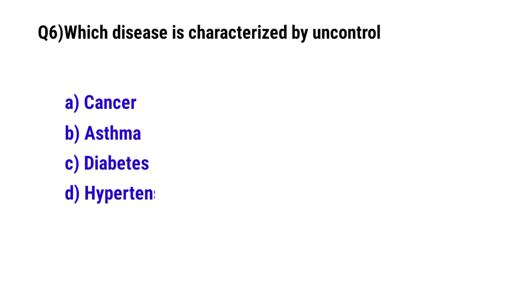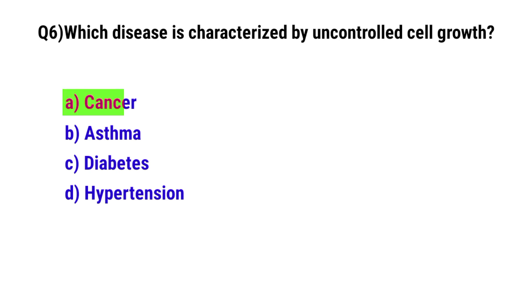Question No. 6: Which disease is characterized by uncontrolled cell growth? The correct option is A: Cancer.